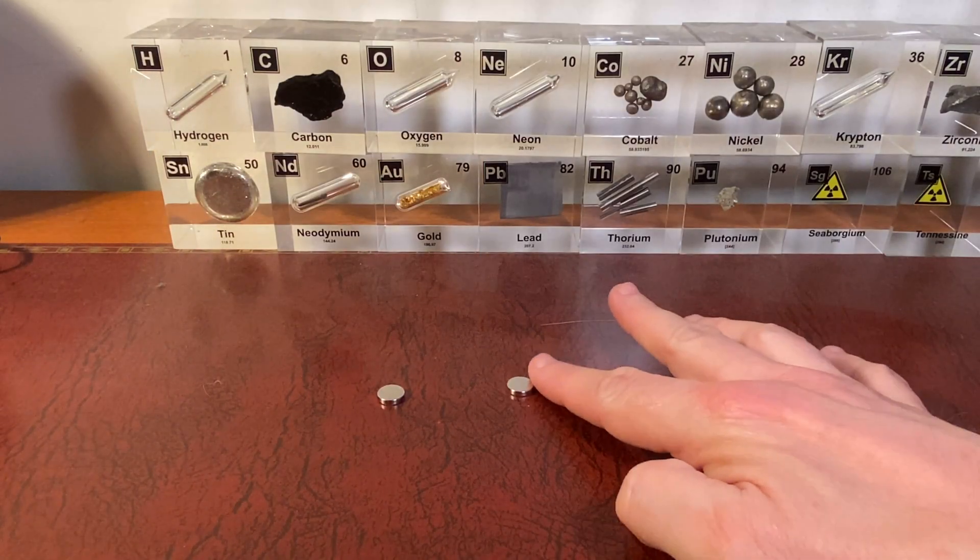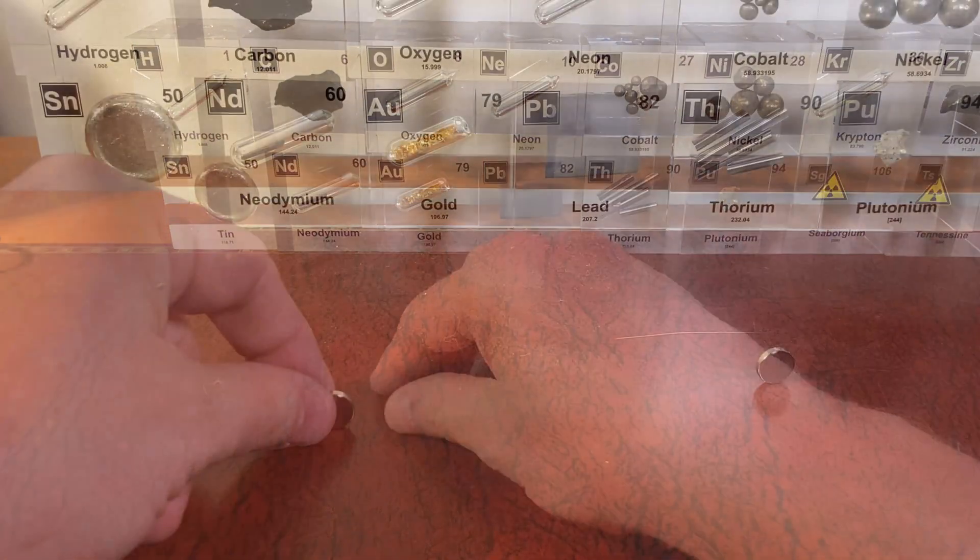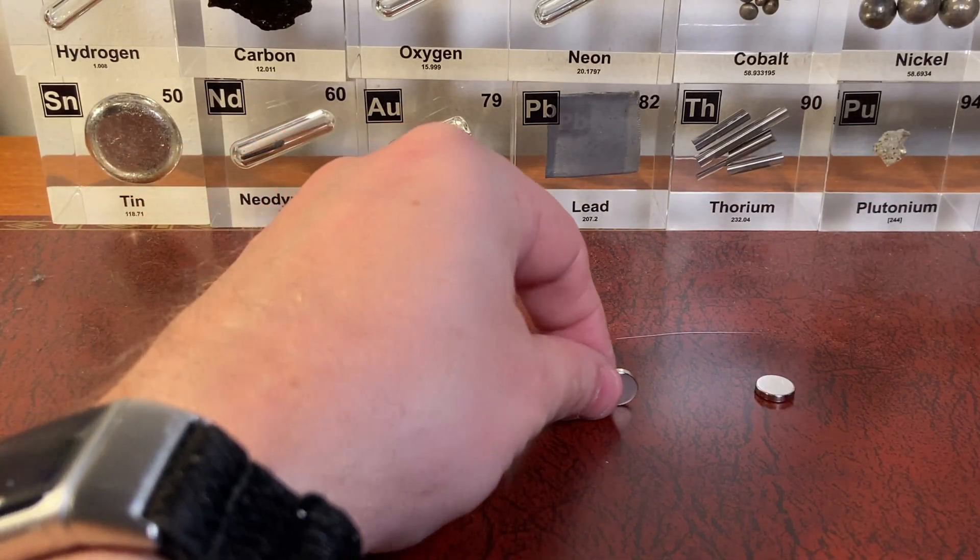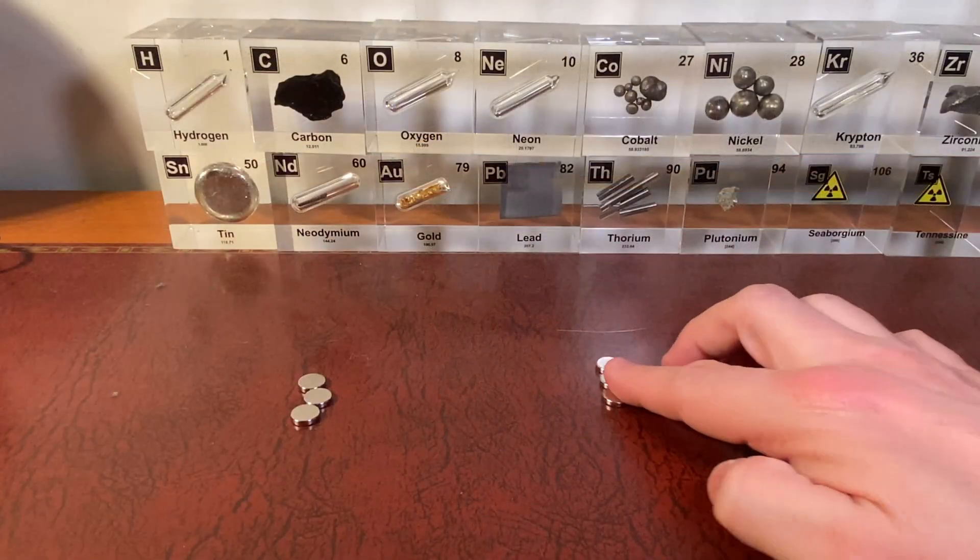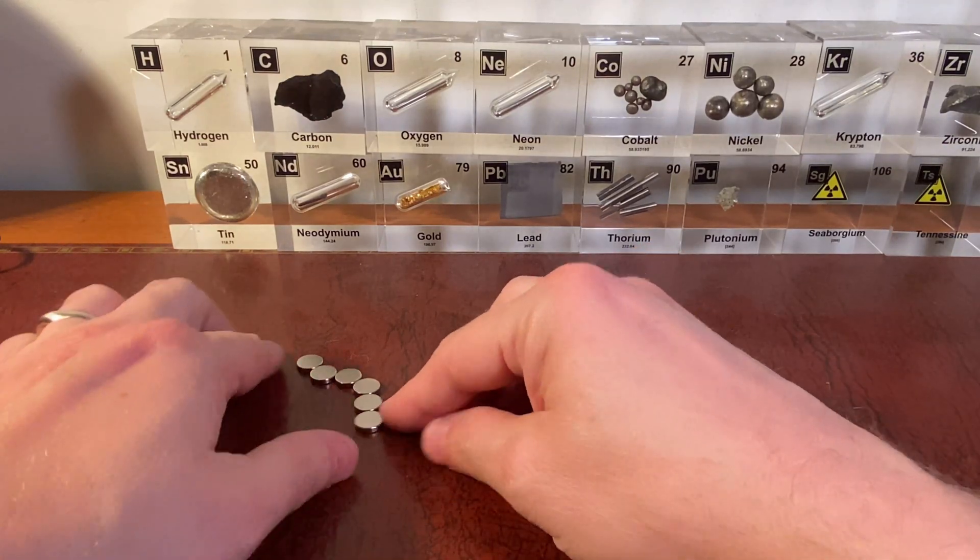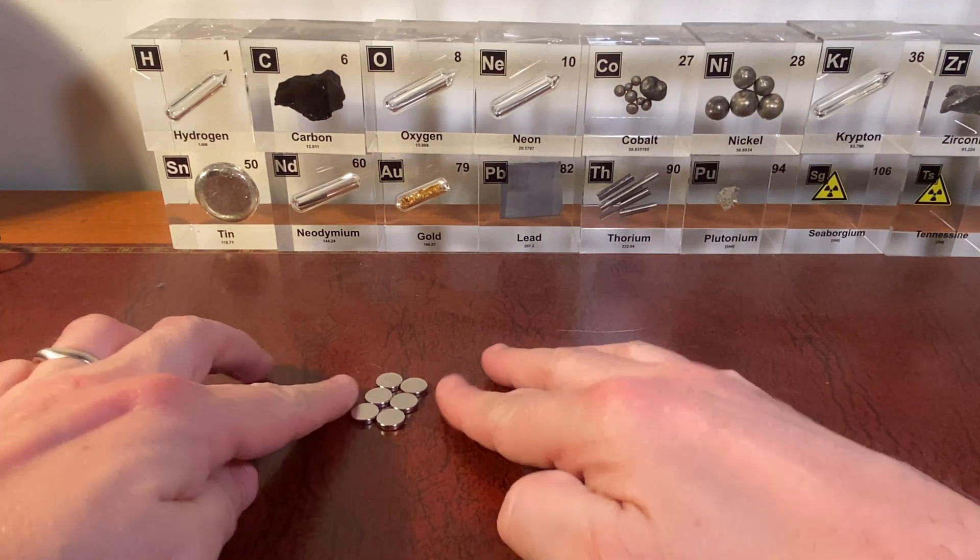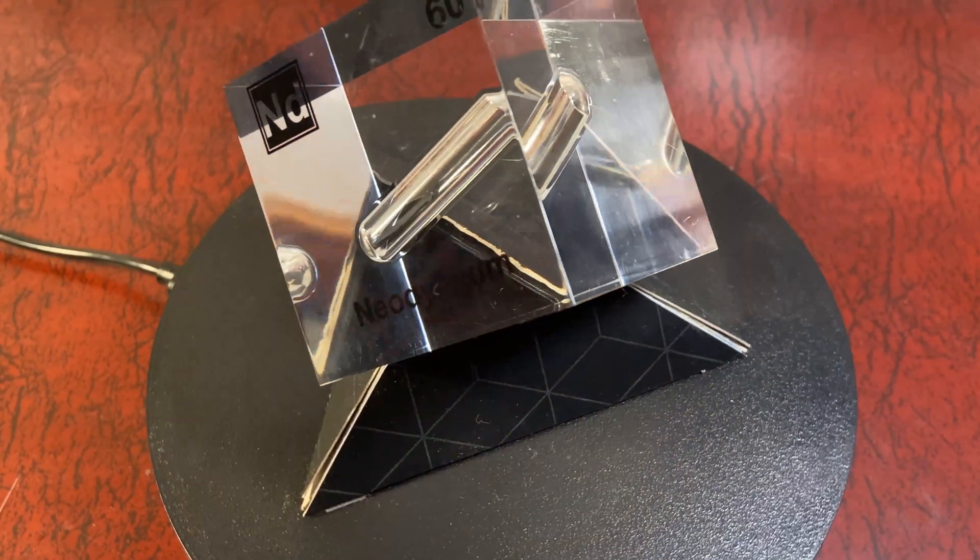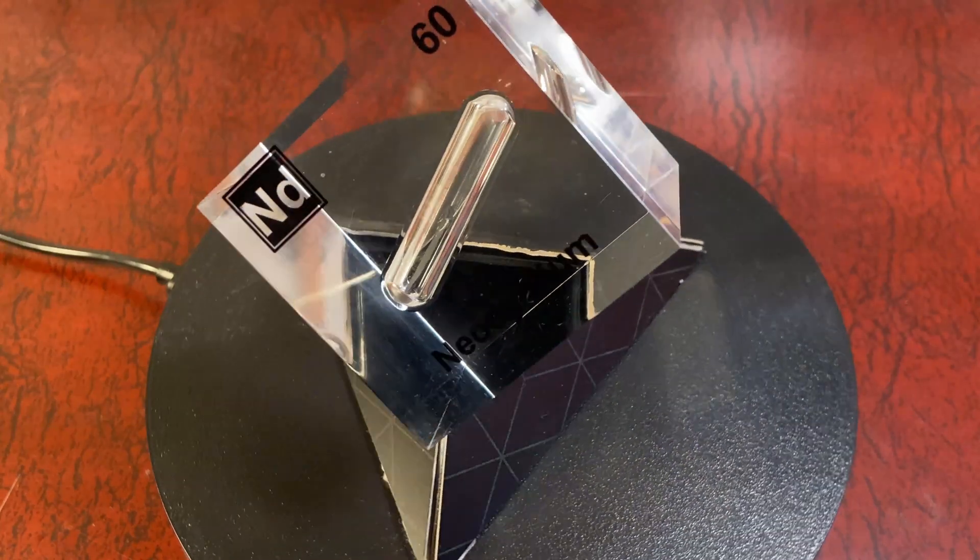Now, what makes neodymium special? Its standout feature are its magnetic properties. Neodymium magnets, known as NdFeB magnets, are the strongest permanent magnets available. They are incredibly powerful, despite their small size, capable of holding up to a thousand times their weight. This strength is due to neodymium's ability to retain high levels of magnetization, making it a crucial component in various high-tech applications.